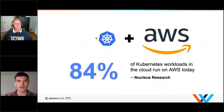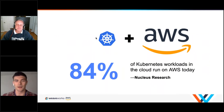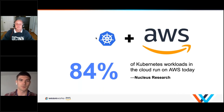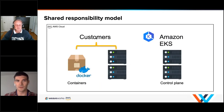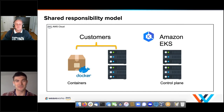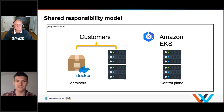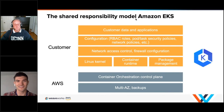Talking about EKS, which is upstream Kubernetes, we see that the majority of Kubernetes workloads in public cloud actually run on Amazon — 84% according to Nucleus Research. When we talk about EKS and security, we can't have that conversation without talking about the shared responsibility model. Amazon is in charge of security of the control plane, and you as a customer are in charge of security of your data plane.